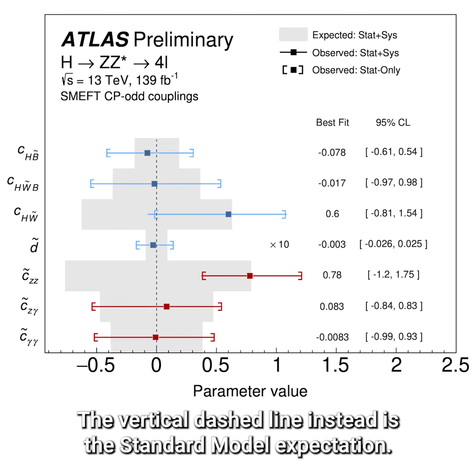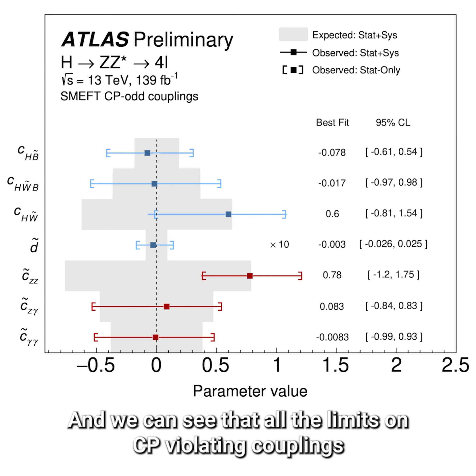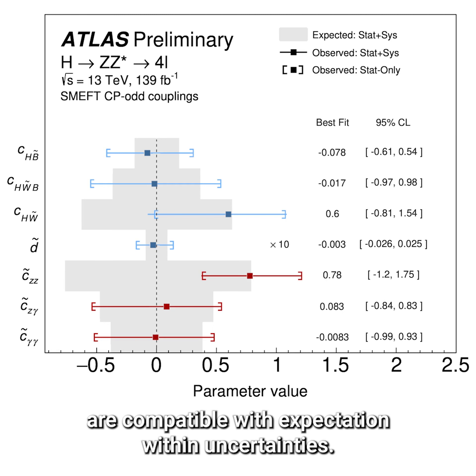The vertical dashed line is the Standard Model expectation, and we can see that all the limits on CP violating couplings are compatible with that expectation within their uncertainties.